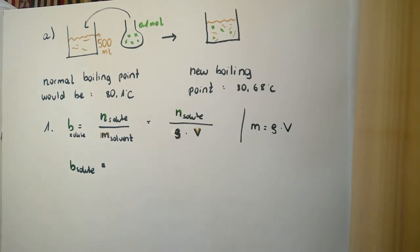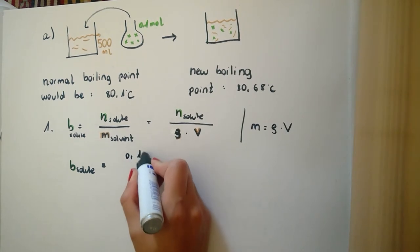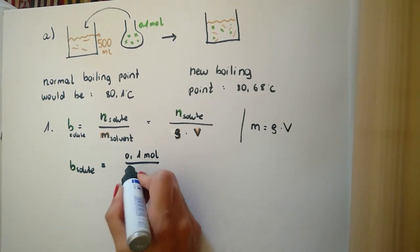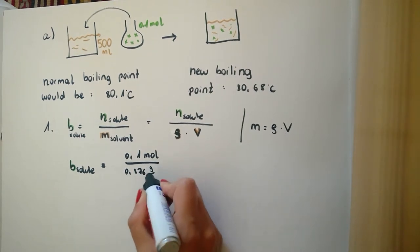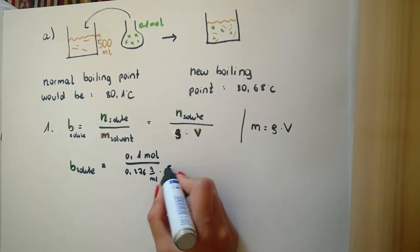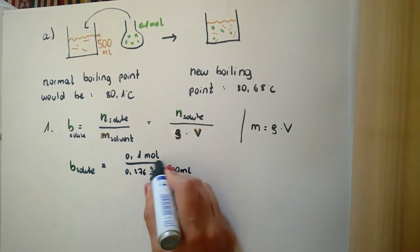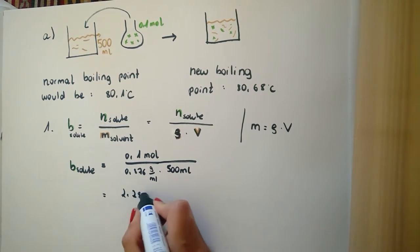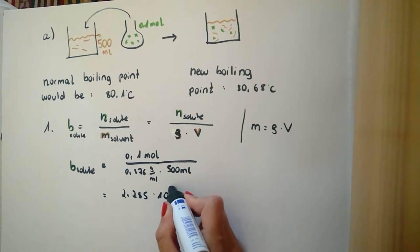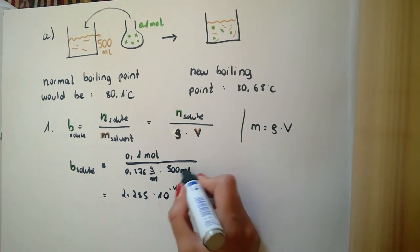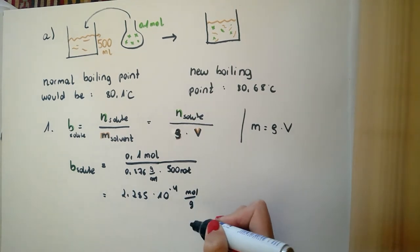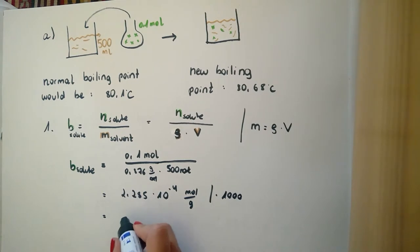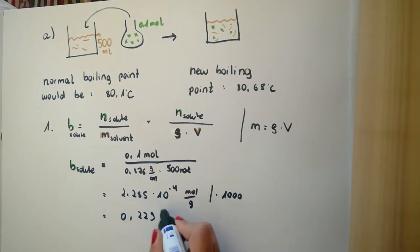We can insert our numbers now: 0.1 mol divided by the density, which is 0.876 g per milliliter, multiplied with 500 milliliter. The result is 2.285 times 10 to the power of minus 4. This has the unit mol per gram, but this is not the SI unit. So we multiply this result with 1000 and we get 0.229 mol per kilogram.